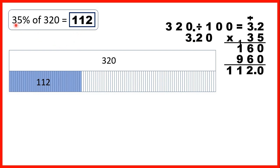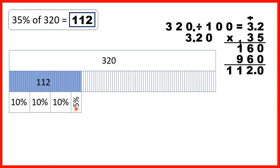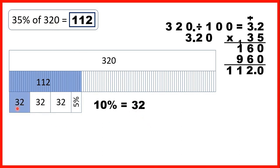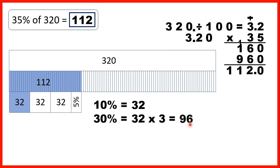There is another method to find 35%. Instead of thinking of 35 1%s, we can think of 35% as 3 lots of 10% and 1 lot of 5%, because 10 plus 10 plus 10 plus 5 is 35. To find 10% we divide by 10, and 320 divided by 10 is 32. To find 30%, that's 10% three times, so we multiply 32 by 3 to get 96.